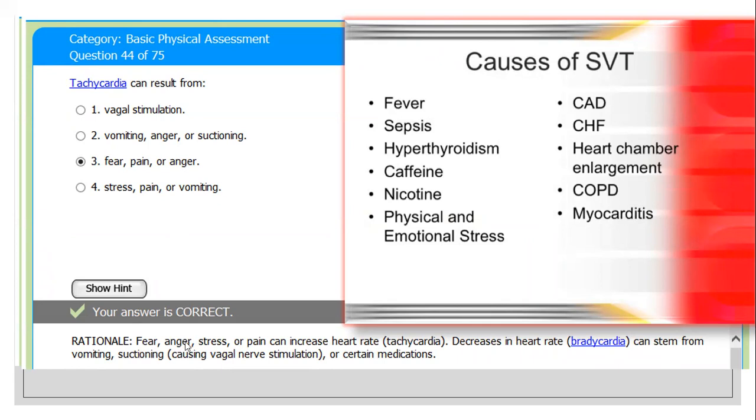Rationale: fear, anger, stress, or pain can increase the heart rate, we call it tachycardia. When heartbeat is more than the normal upper limit, we call it tachycardia. The causes of tachycardia or supraventricular tachycardia include fever.